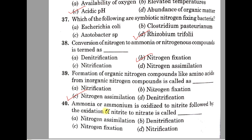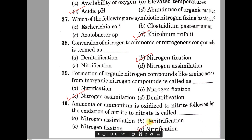Question number 40. Ammonia or ammonium is oxidized to nitrite, followed by the oxidation of nitrite to nitrate — this process is called A: Nitrogen assimilation, B: Denitrification, C: Nitrogen fixation, D: Nitrification. The conversion of ammonia to nitrite and then nitrite to nitrate is carried out by chemolithotrophic bacteria like Nitrosomonas, Nitrococcus, and Nitrospira.